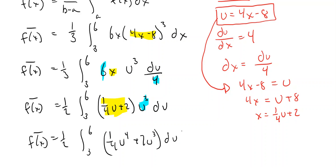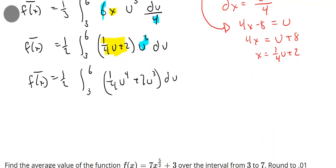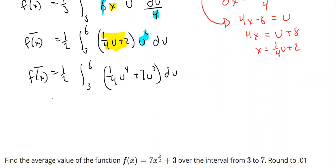Now we can actually do the integrating. And so this will become 1 half. And so we're going to have 1 fourth times 1 fifth u to the fifth plus 2 times 1 fourth u to the fourth from 3 to 6.